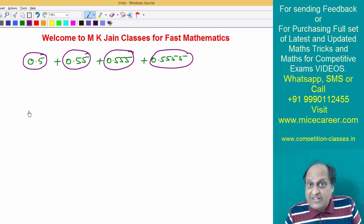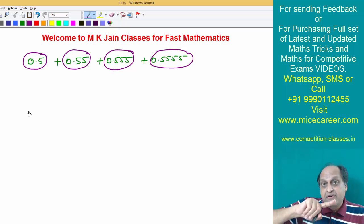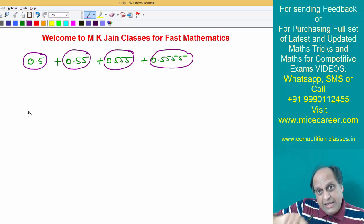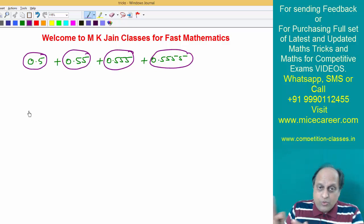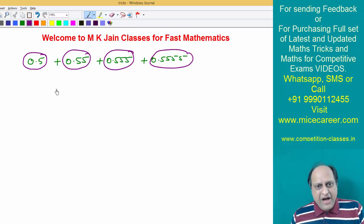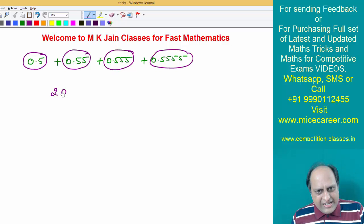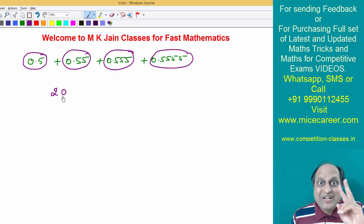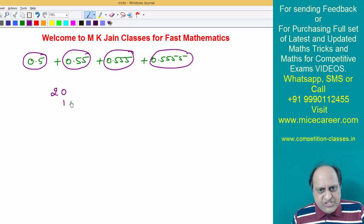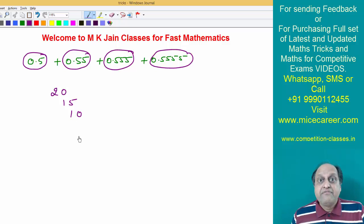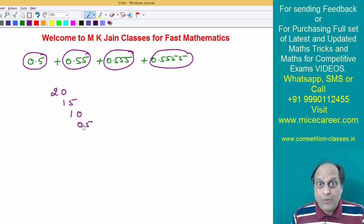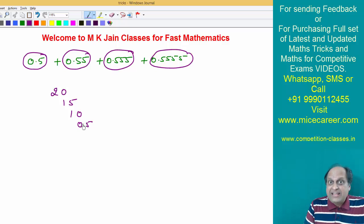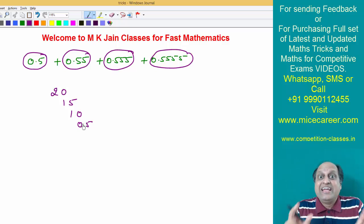Since there are four terms, you need to multiply 5 with 4, then keep on reducing it: 5 with 3, 5 with 2, 5 with 1. Now, 5 into 4 is 20, and you need to write the answer in two digits. 5 into 3 is 15. 5 into 2 is 10. 5 into 1 is 5 — but you need to write 05. Why? Because every multiplication has to be written in two digits.